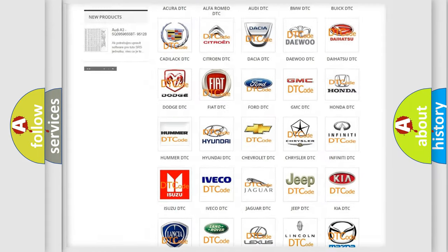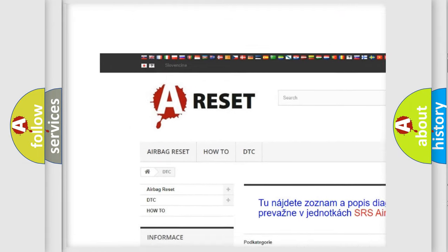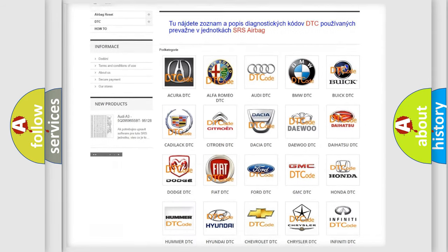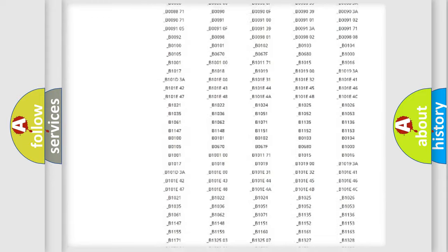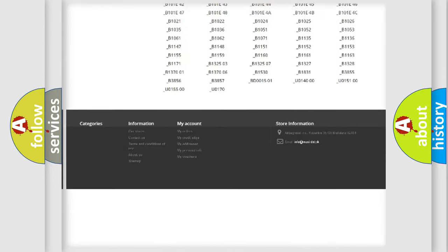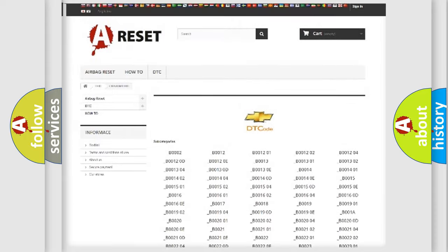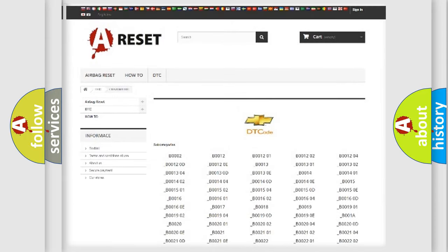Our website airbagreset.sk produces useful videos for you. You do not have to go through the OBD2 protocol anymore to know how to troubleshoot any car breakdown. You will find all the diagnostic codes that can be diagnosed in Chevrolet vehicles, also many other useful things.